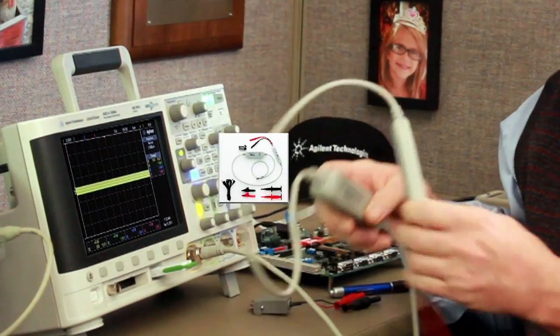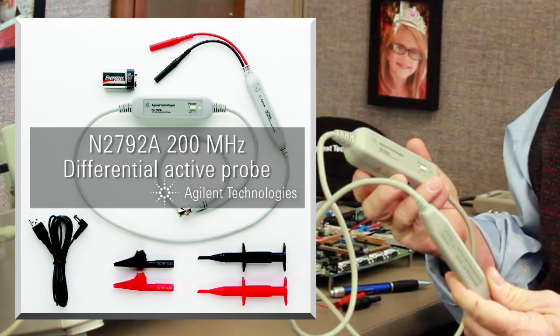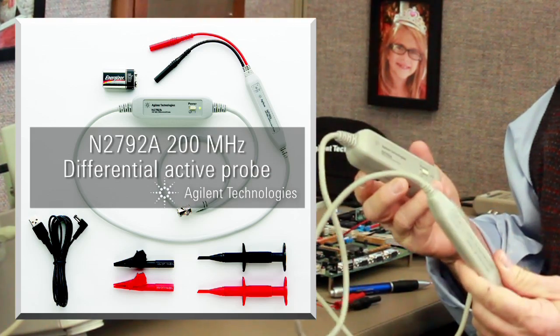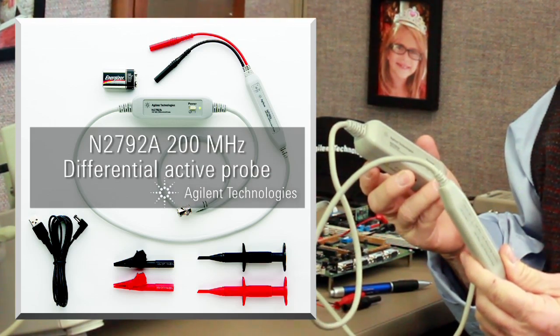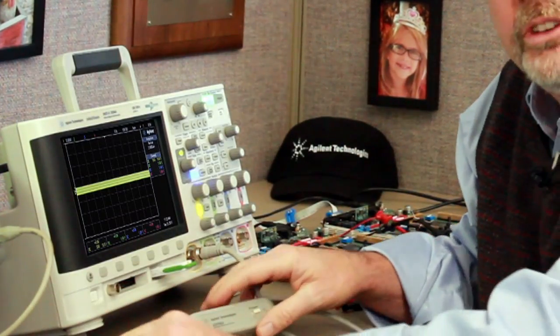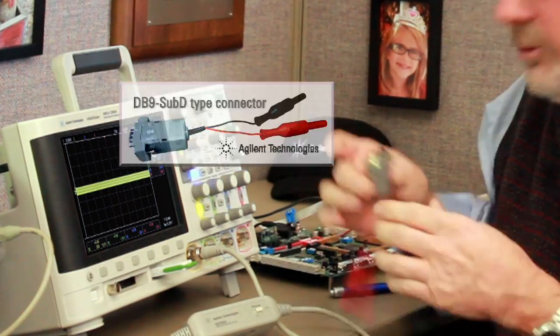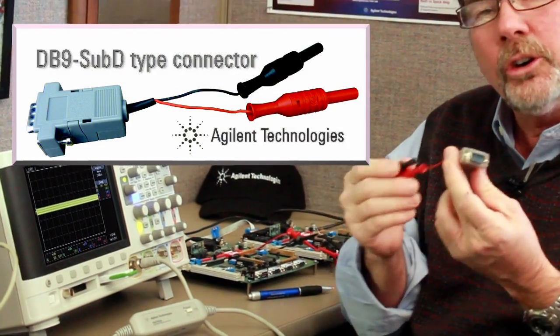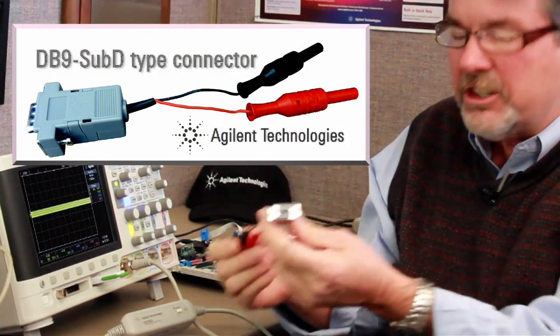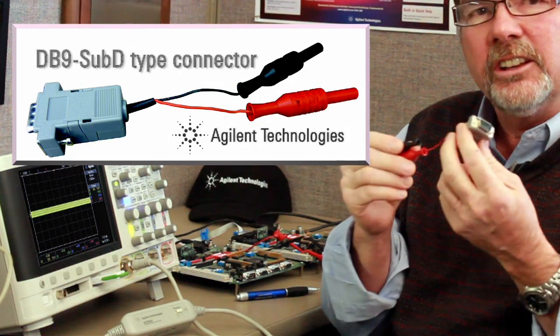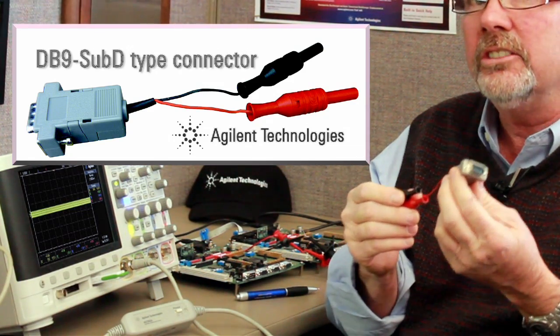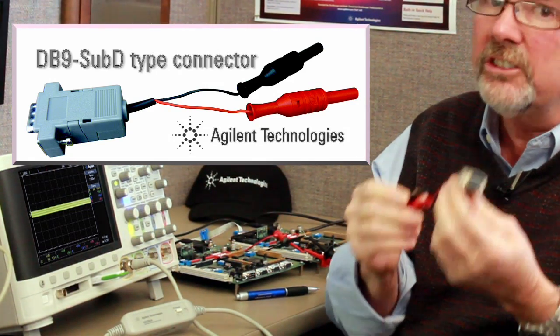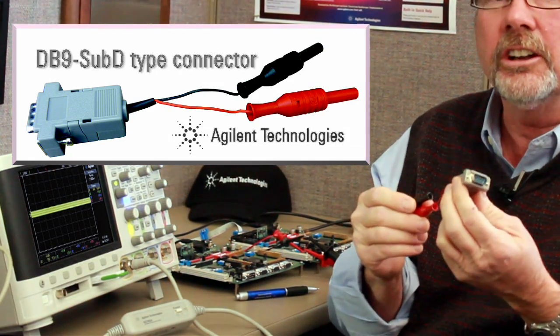The next step in making this measurement is to probe the differential FlexRay bus. Agilent recommends using the N2792A 200 MHz bandwidth differential active probe. Also available is a special probe head you can order that attaches to this probe and directly connects to DB9 sub-D type connectors, making it easy to connect to your circuits.